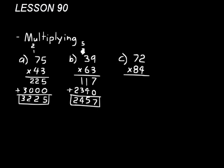Let's do one more. 72 times 84. So first let's do 72 times the 4. So we'll have 4 times 2 is 8. 7 times 4 is 28.